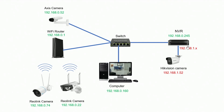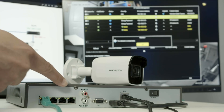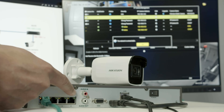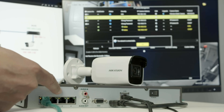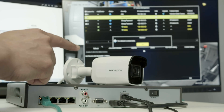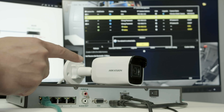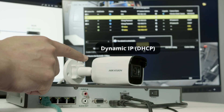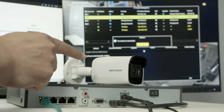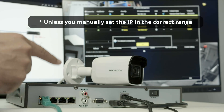The Hikvision camera has the IP 192.168.1.52, and this IP is given by the NVR. When you connect your camera to one of the PoE ports, the NVR assigns that camera an IP of 192.168.1.something — in this case 52. If I connect a second camera, it would get 192.168.1.53 or 54, and so on. Be aware that your camera needs to be set to dynamic IP configuration — you cannot manually set a static IP on the camera, otherwise the NVR won't be able to assign it an address.